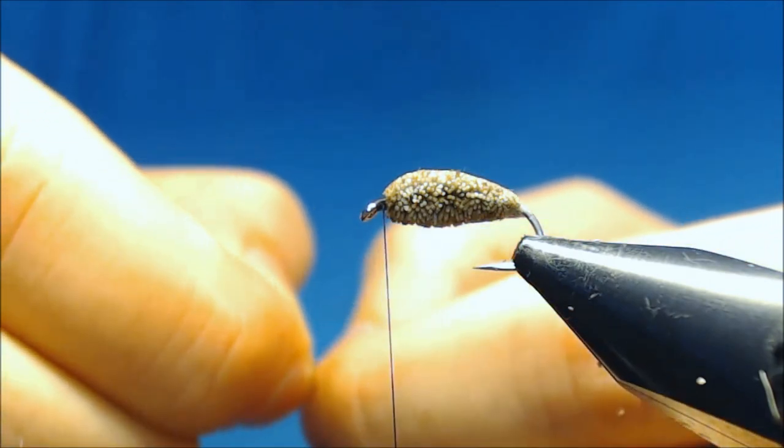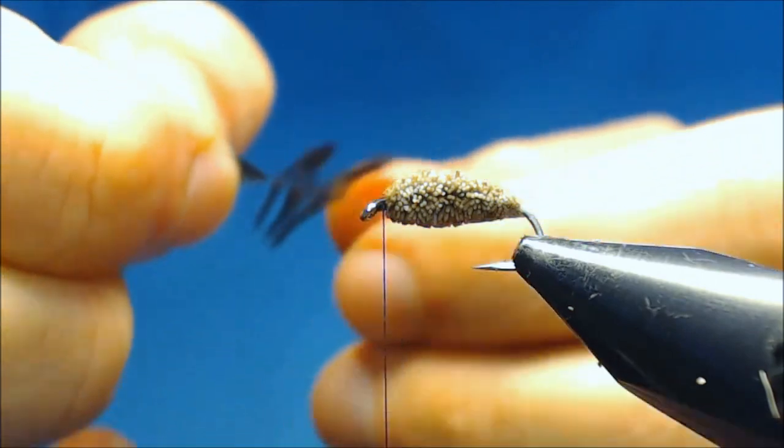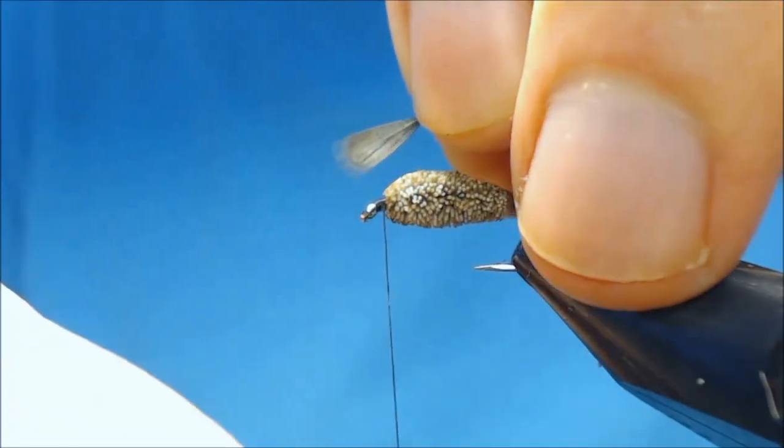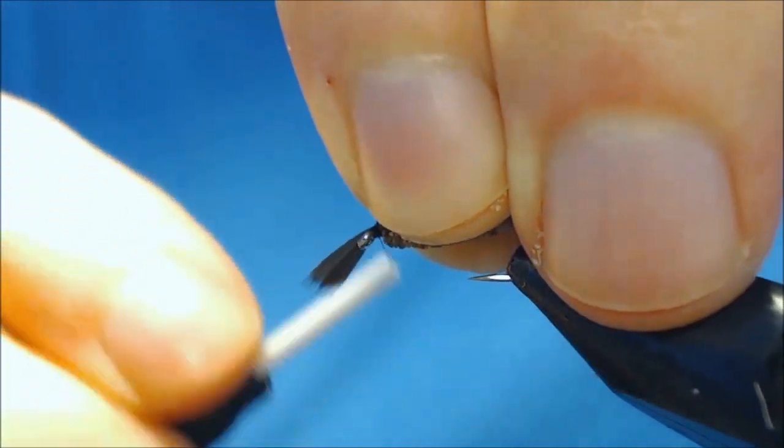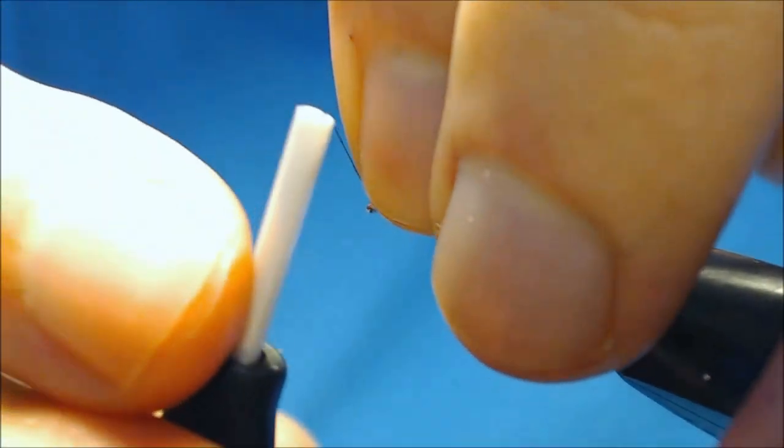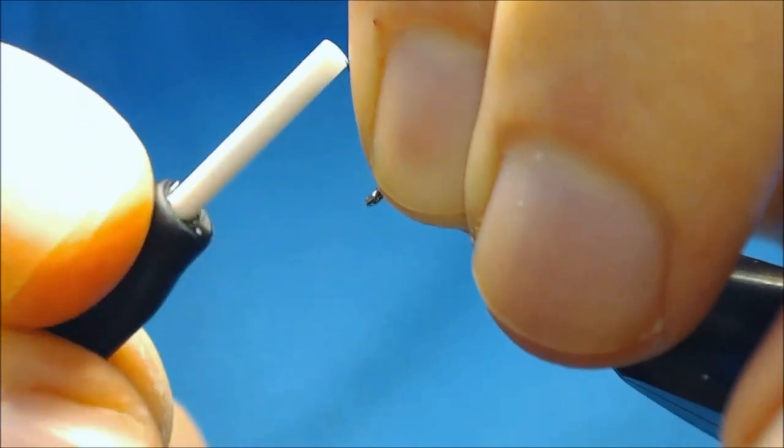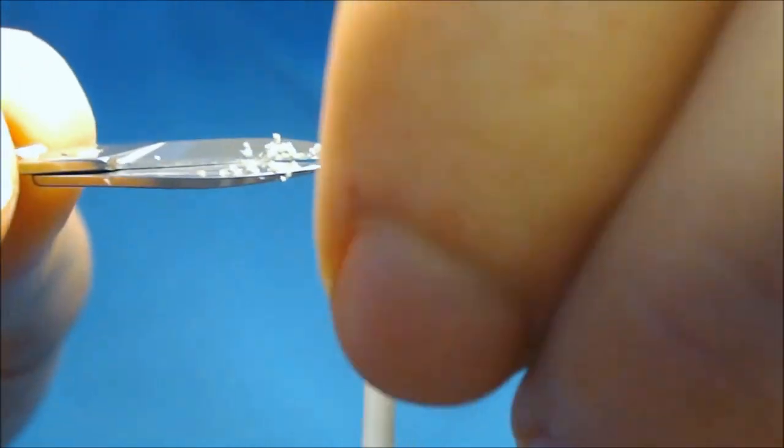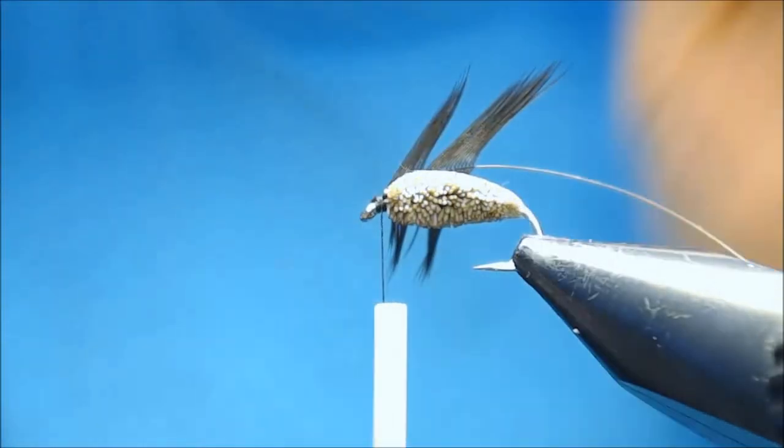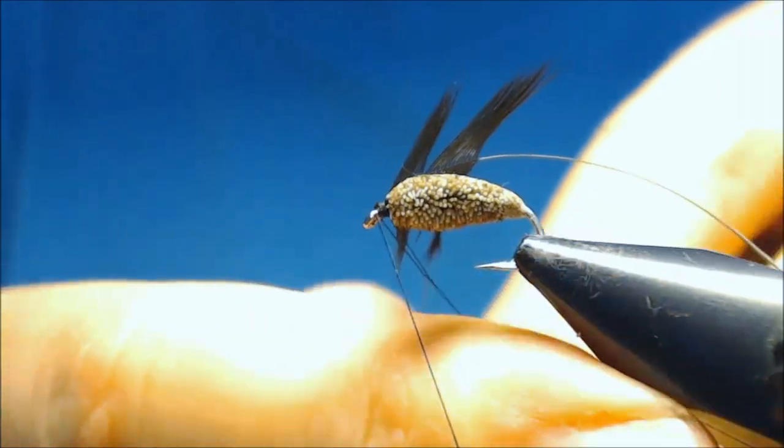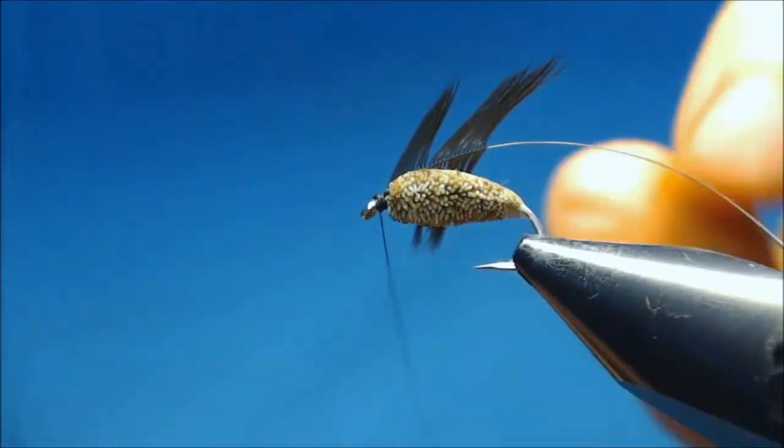Then tie in at the hook eye. And here you can double it for some strength. And come in with your scissors and cut off the excess. And here I like to do a half hitch to make sure the thread won't come loose.